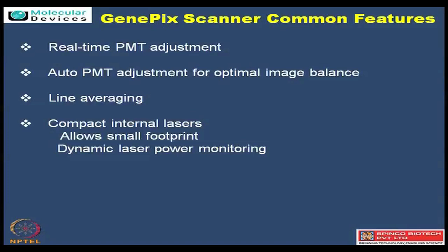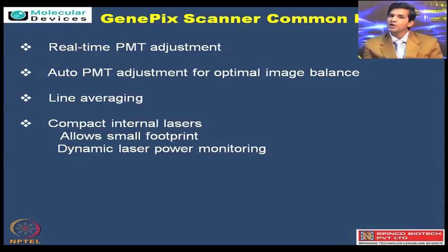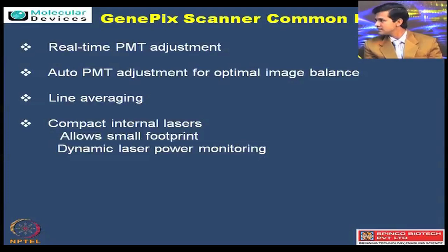PMT - the photomultiplier tube - real-time adjustment means at the level of scanning we can look at the data when scanning is live. In this form we can control the PMT live in between the scan. There is also an auto PMT adjustment for those who are not comfortable with controlling them manually - we have given an auto PMT option which allows Acuity to get the best output. GenePix Pro allows multiple scans by itself, so the best PMT suitable for one application can then be seen immediately.